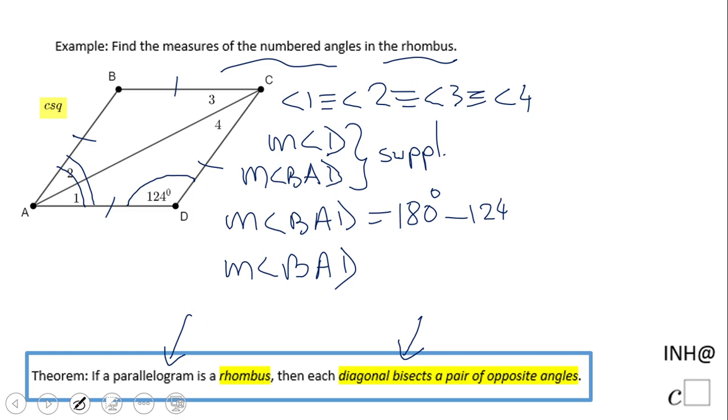let's do the math: 180 minus 124 is 56 degrees. And now I need to do one more thing to find